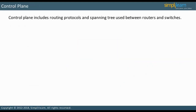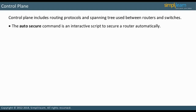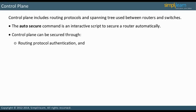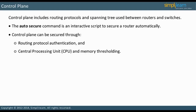Control Plane includes routing protocols and spanning tree used between routers and switches. The auto-secure command is an interactive script used to automatically secure a router. Other security measures include routing protocol authentication and CPU and memory thresholding.